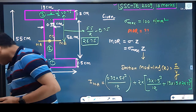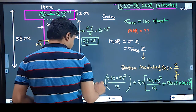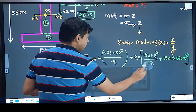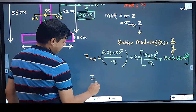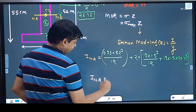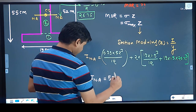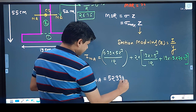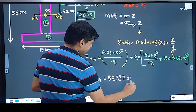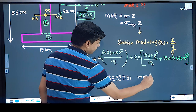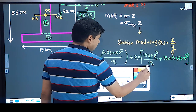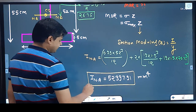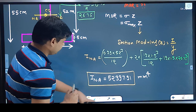Let me verify that. Yes, the value of the moment of inertia about the neutral axis is 52397.91 cm⁴. This is the moment of inertia about the neutral axis.